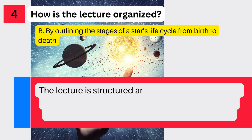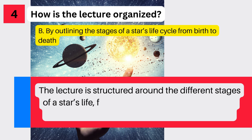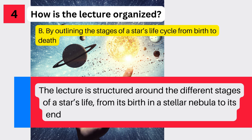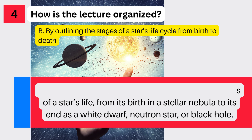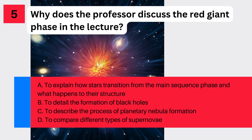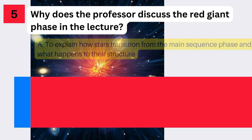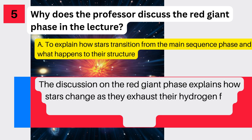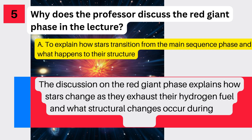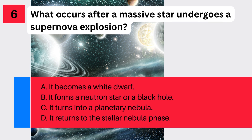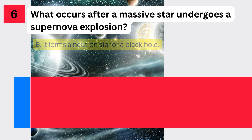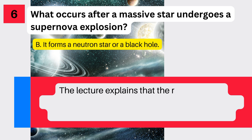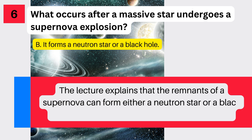Answer four: The lecture is structured around the different stages of a star's life, from its birth in a stellar nebula to its end as a white dwarf, neutron star, or black hole. Answer five: The discussion on the red giant phase explains how stars change as they exhaust their hydrogen fuel, and what structural changes occur during this phase. Answer six: The lecture explains that the remnants of a supernova can form either a neutron star or a black hole, depending on the mass of the star's core.